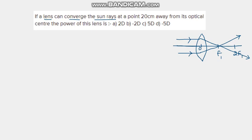Since these rays converge to a point at the focus, that is where the image will be formed — that place is the focus of the lens. The length OF1 is known as the first focal length, f1. This convex lens forms a real image of a distant object. The image is real because it is formed by the actual intersection of the refracted rays, which meet at the first focus.